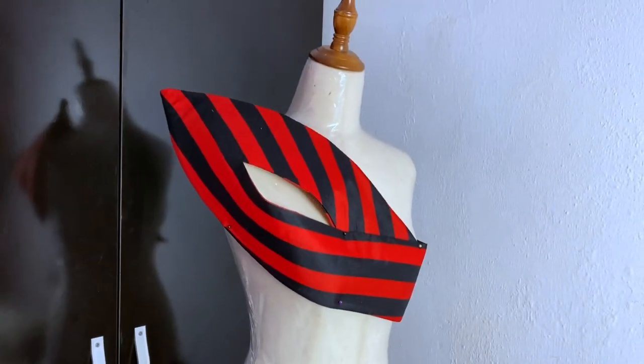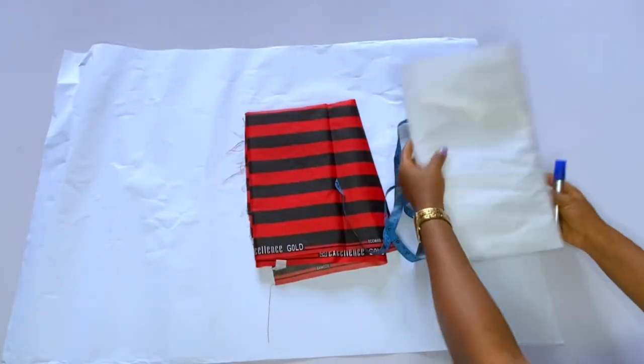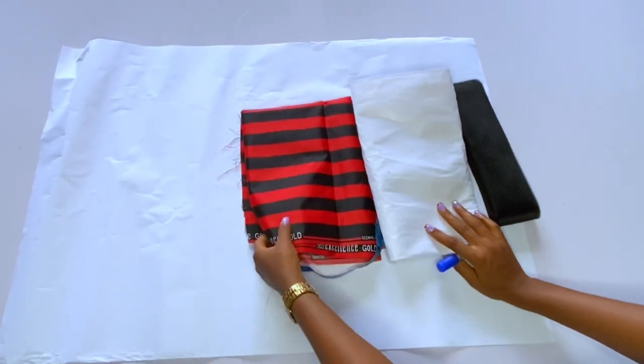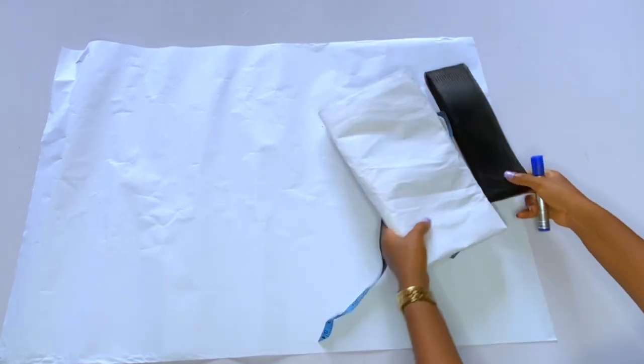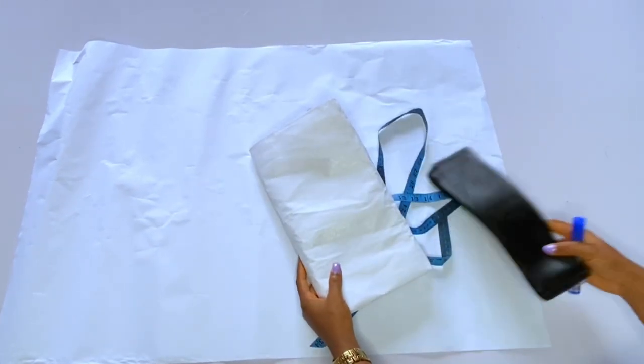Now these are the materials that I'm going to be needing. I have my fabric, I have my gum. This interface that I have here is the thickest gum, you can call this Peplone Stay.